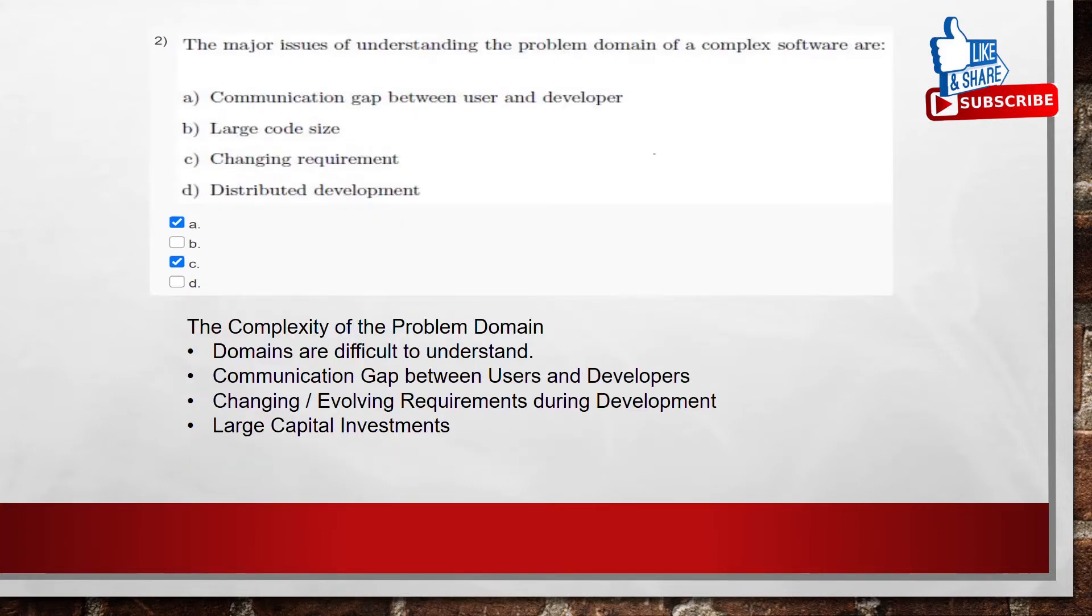Coming to the second question. The major issues of understanding the problem domain of a complex software are, there are four options. Communication gap between the user and developer, Large code size, Changing requirements, Distributed development.